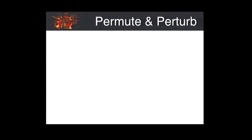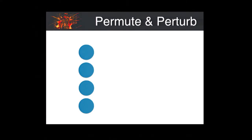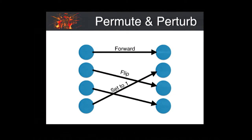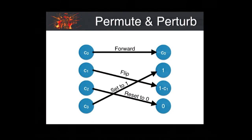Suppose we have an encoding which has four bits. The adversary first defines a permutation — this is the permutation defined by the tampering function. Next, for each bit, the adversary can choose to forward the bit, flip the bit, set it to one, or reset it to zero. So, using this example, suppose the initial codeword was C0, C1, C2, C3. Then the tampered codeword will be C0, 1, 1 minus C1, and 0.